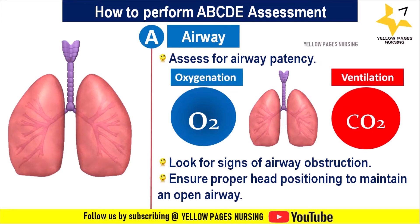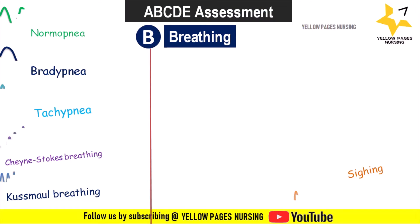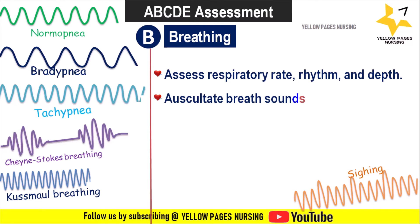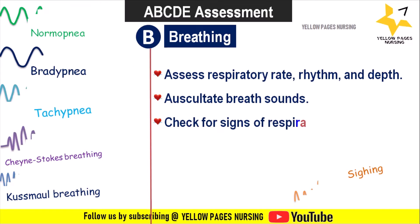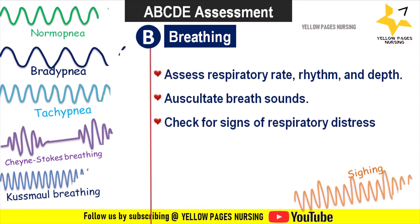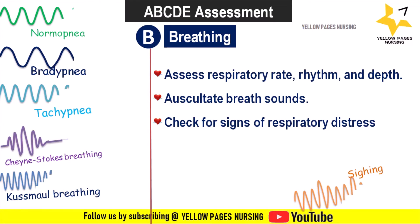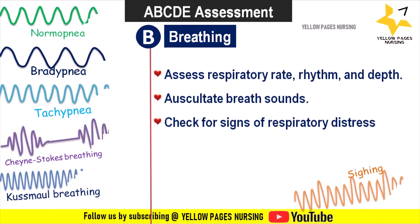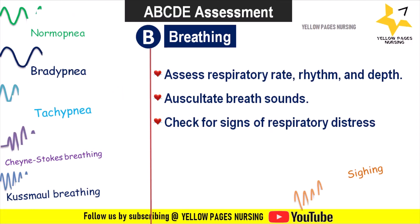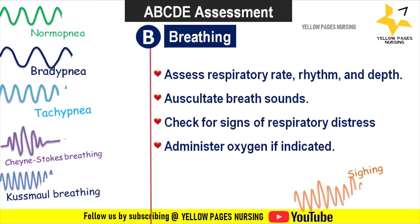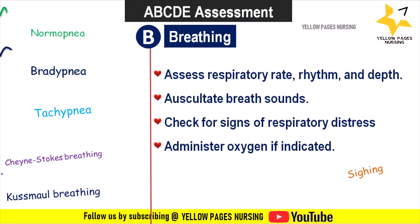Breathing: assess respiratory rate, rhythm, and depth. Auscultate breath sounds and find whether the patient has abnormal breath sounds such as ronchi, wheezing, stridor, crackles, or rales. Check for signs of respiratory distress — observe for signs of increased work of breathing such as use of accessory muscles, nasal flaring, or paradoxical chest movement. Administer supplemental oxygen if the patient is hypoxic or shows signs of respiratory distress.